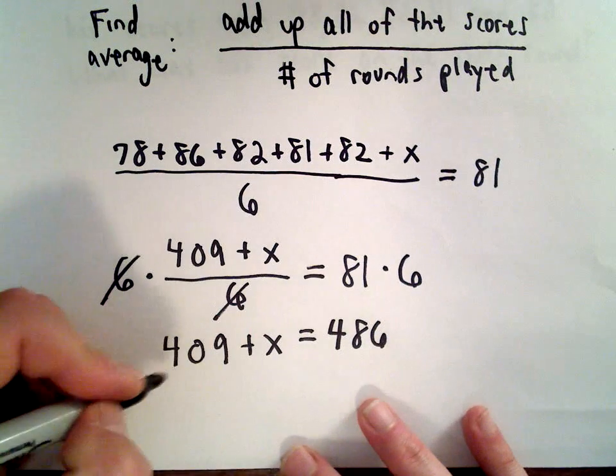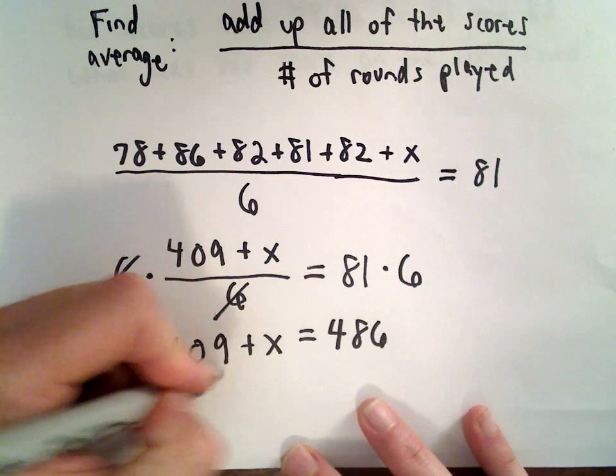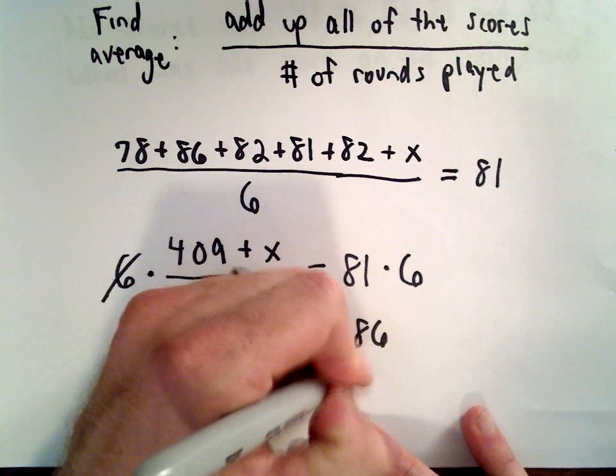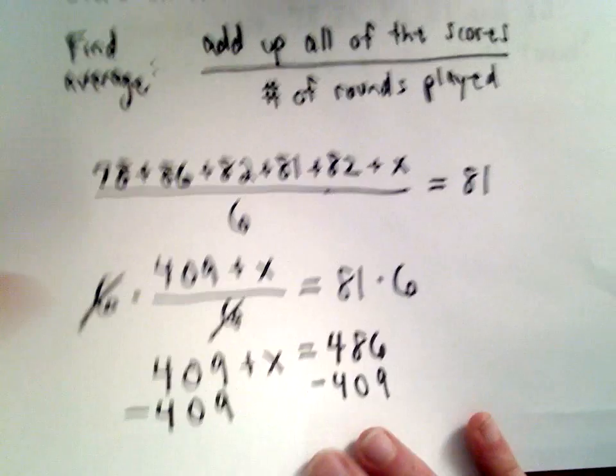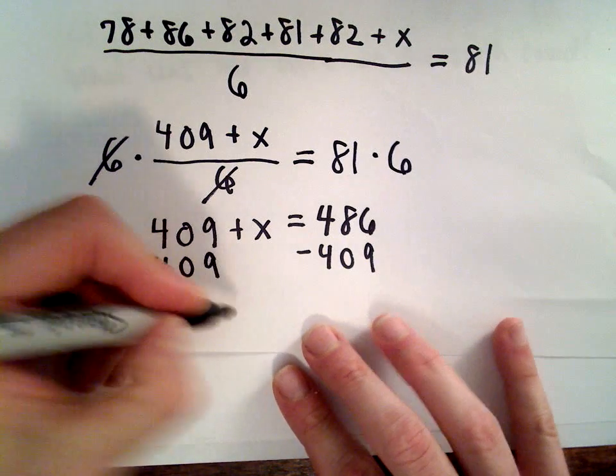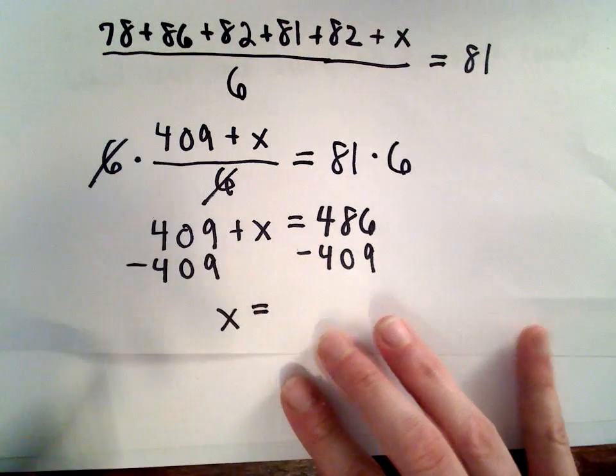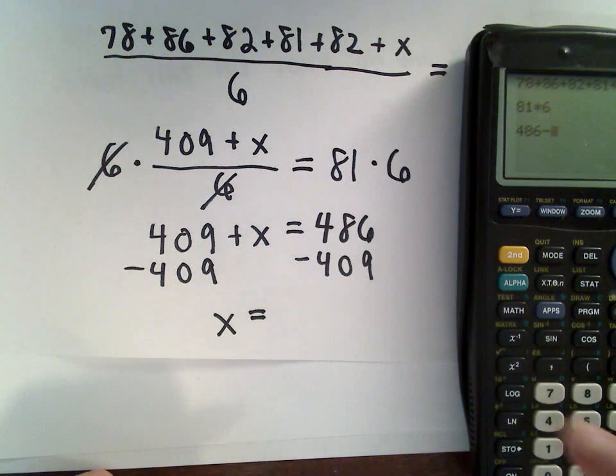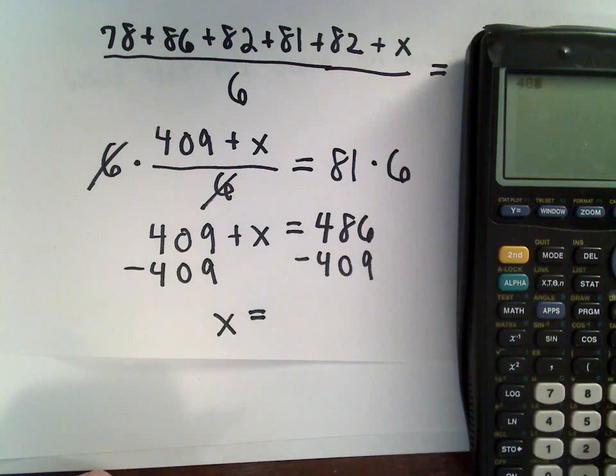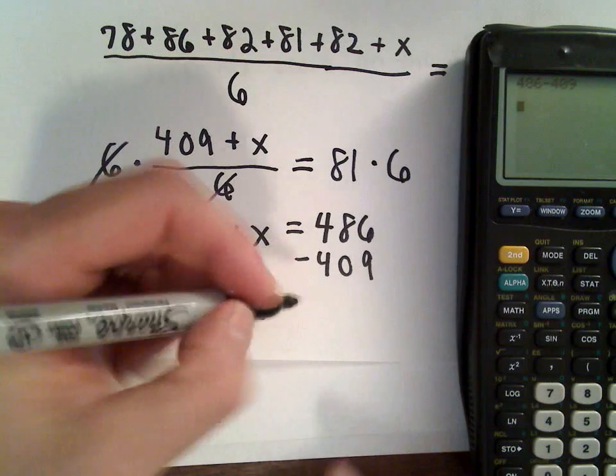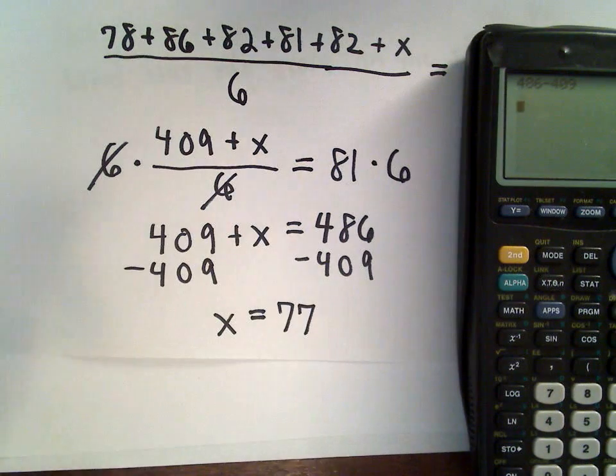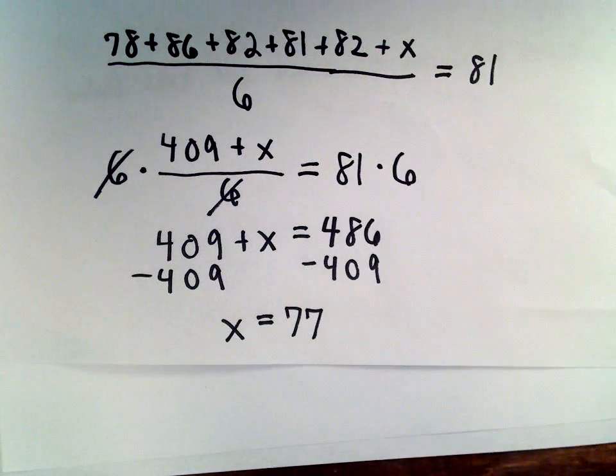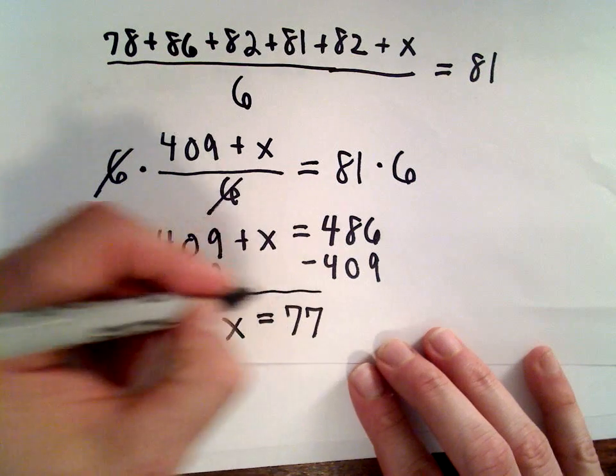Last but not least, to solve for X, we can subtract 409 from both sides. On the left side, if we subtract, we'll just be left with an X. 486 minus 409, I'm getting that to be equal to 77. So it looks like his score on that sixth round was equal to 77.